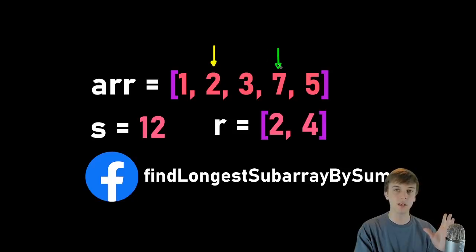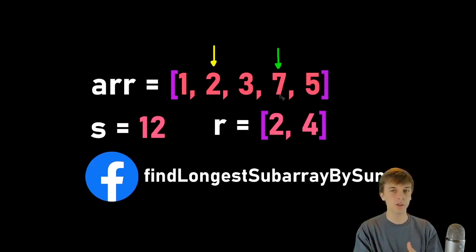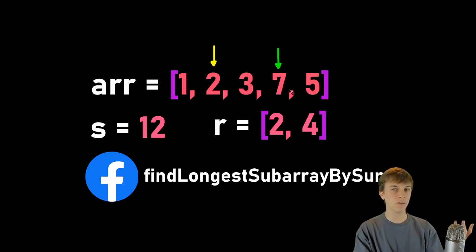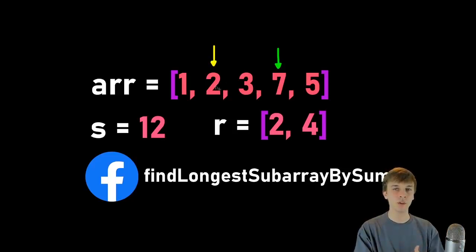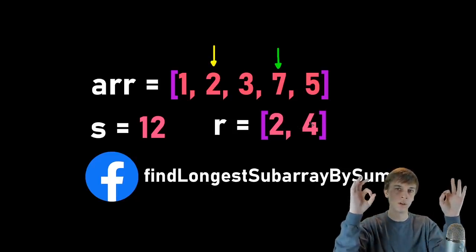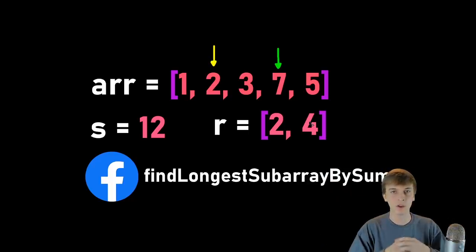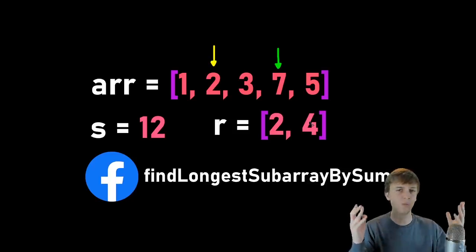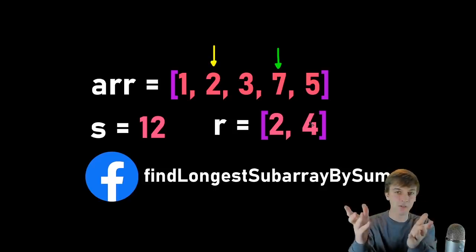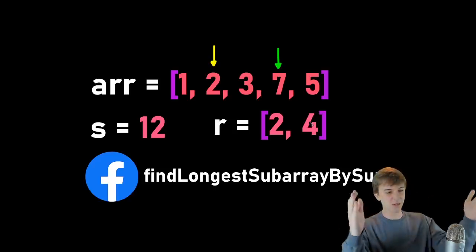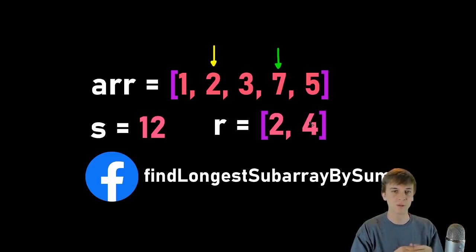In this case it's going to be from the yellow arrow to the green arrow: two, three, seven — because two plus three plus seven equals 12. There's another subarray that equals 12: seven and five, seven plus five is 12, but that's shorter than two, three, and seven. So we return the boundaries — from which starting position to ending position in the array is the longest subarray that equals the sum. An array of numbers, given a sum, we find the longest subarray where the numbers add up to get that sum.